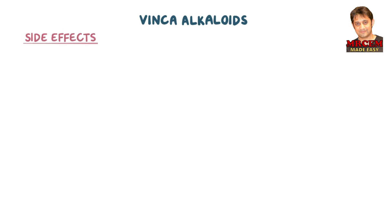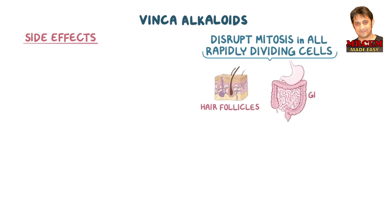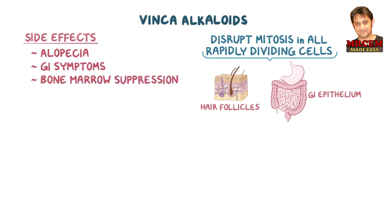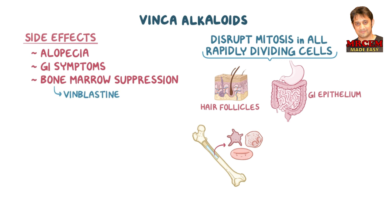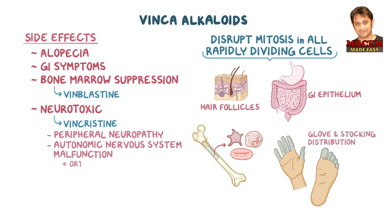Vinca alkaloids disrupt the progression of mitosis in all rapidly dividing cells in the body, including hair follicles and gastrointestinal epithelium. So vinblastine and vinorelbine cause alopecia, or loss of hair, and gastrointestinal symptoms. In addition, they are associated with bone marrow suppression, since the cells here are constantly making platelets, red, and white blood cells. Vinblastine causes more bone marrow suppression, but vincristine is more neurotoxic, which usually manifests as peripheral neuropathy causing symptoms like a decrease in sensation in the toes and fingers, sometimes called a glove and stocking distribution, as well as autonomic nervous system malfunction with orthostatic hypotension, urinary retention, and constipation.